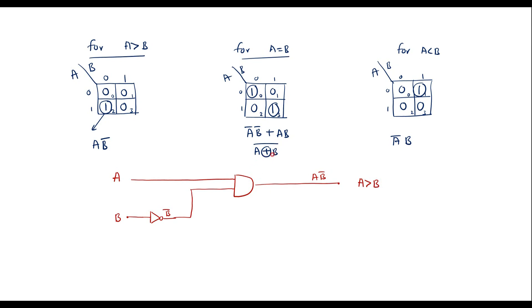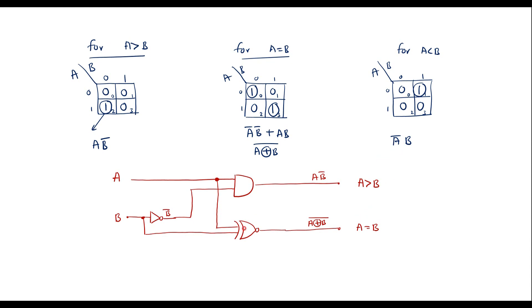For a XNOR b (a equal to b), we use one XNOR gate with a and b as inputs. The output of this XNOR gate represents a equal to b. For a less than b, we take one AND gate. The a line passes through a NOT gate to produce ā, which is one input, and b is the other input. The output is ā·b, which represents a less than b. This is the complete circuit diagram for the one-bit comparator.